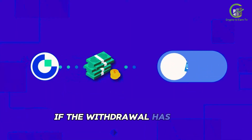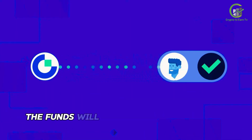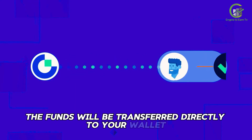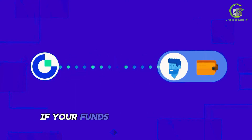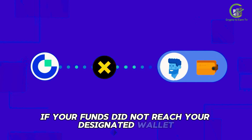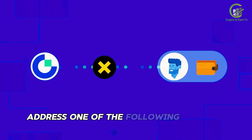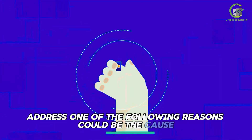If the withdrawal has been successfully conducted, the funds will be transferred directly to your wallet address. If your funds did not reach your designated wallet address, one of the following reasons could be the cause.